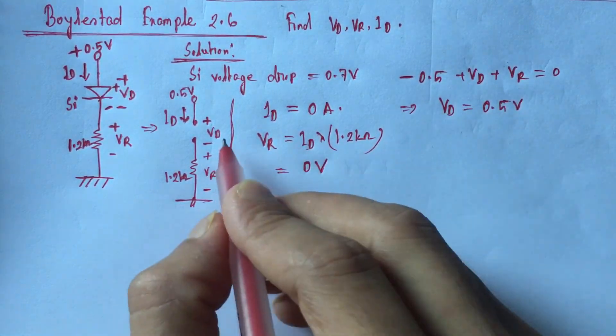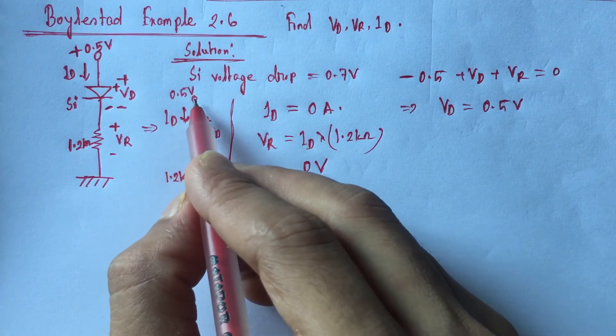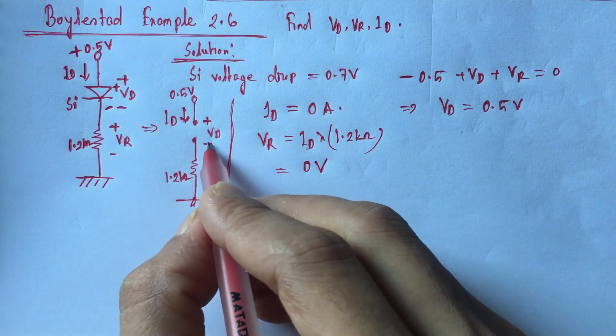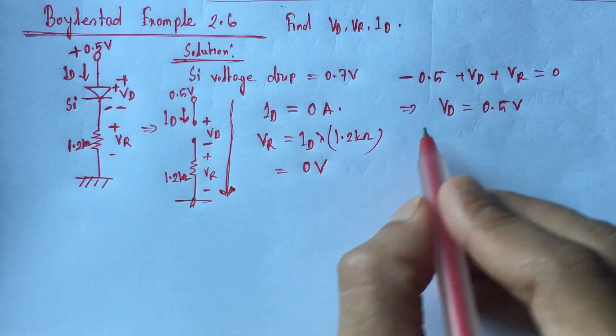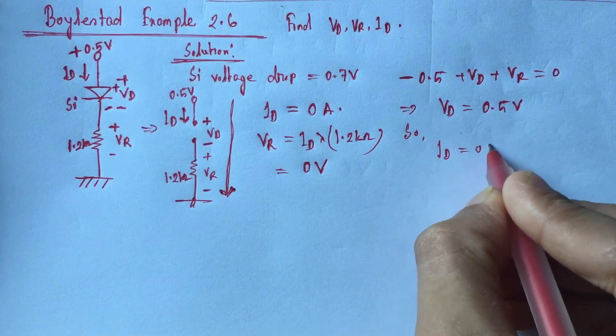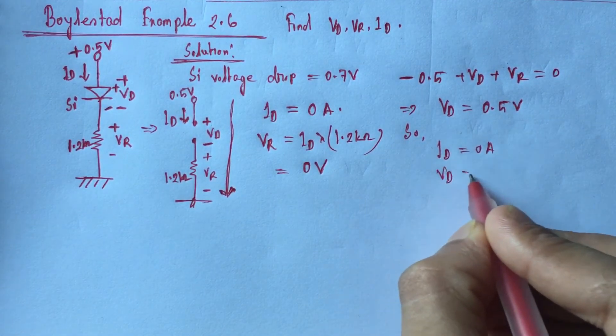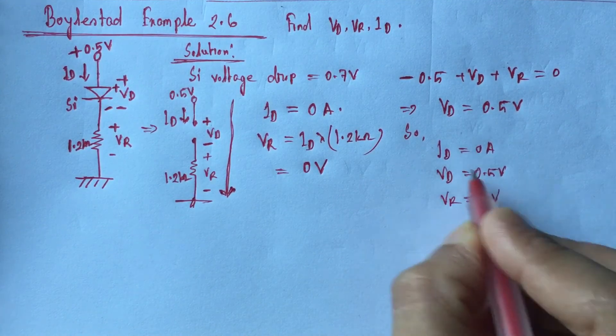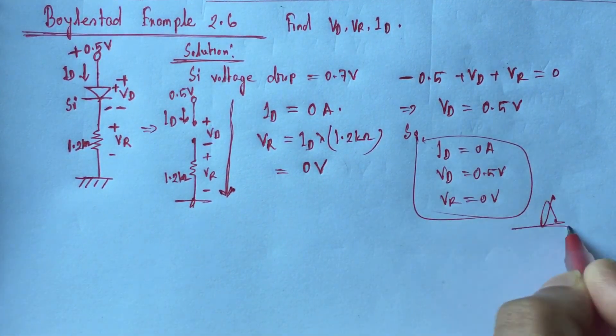So the applied biasing voltage will appear across the diode since the diode is open. Now we get ID is equal to 0 ampere, VD is equal to 0.5 volt, and VR is equal to 0 volt. This is the answer.